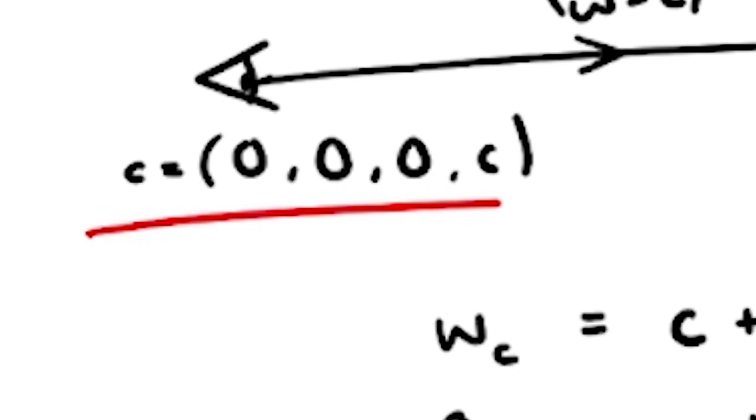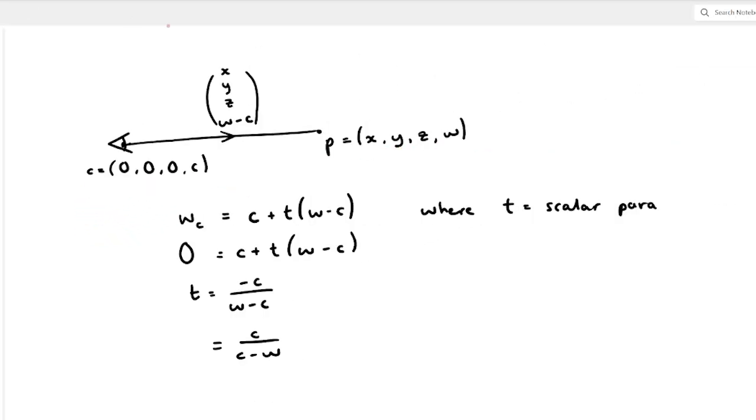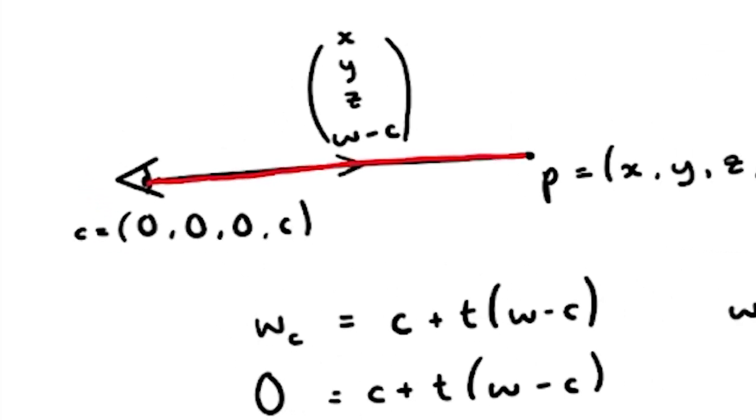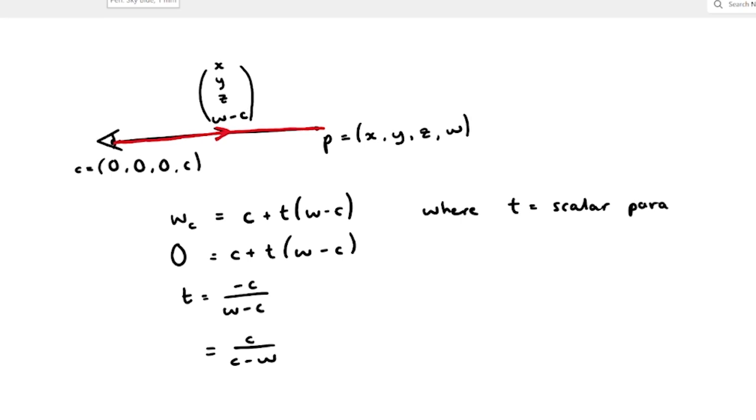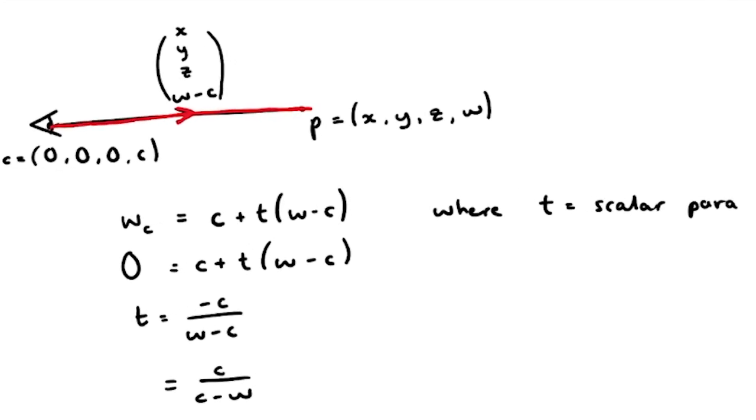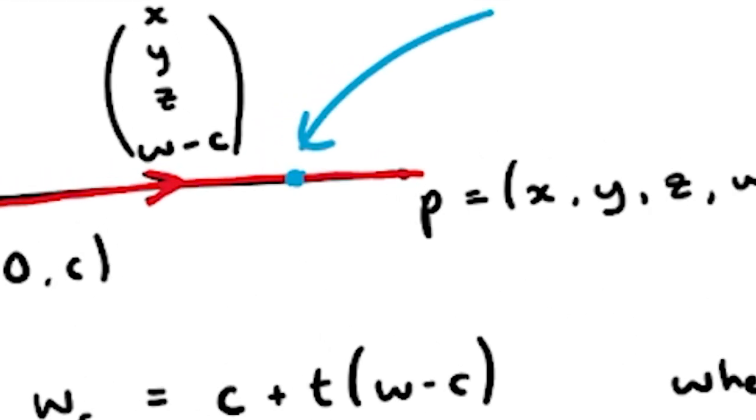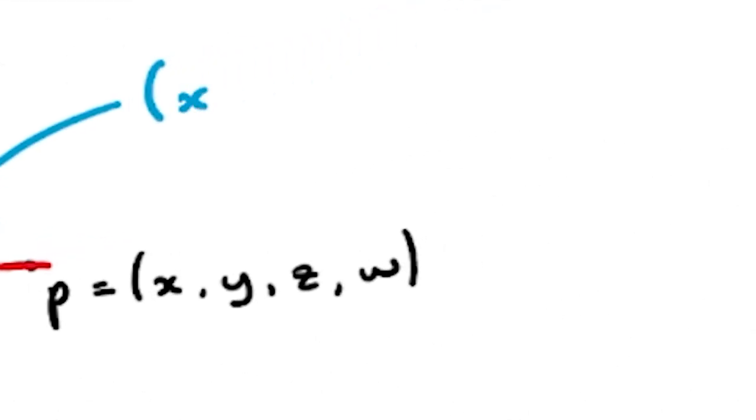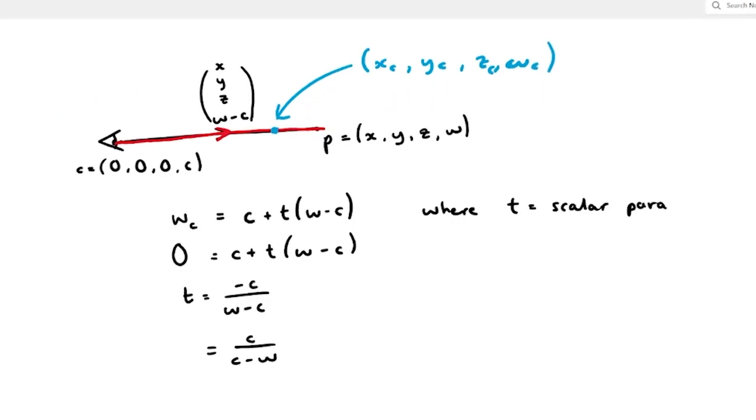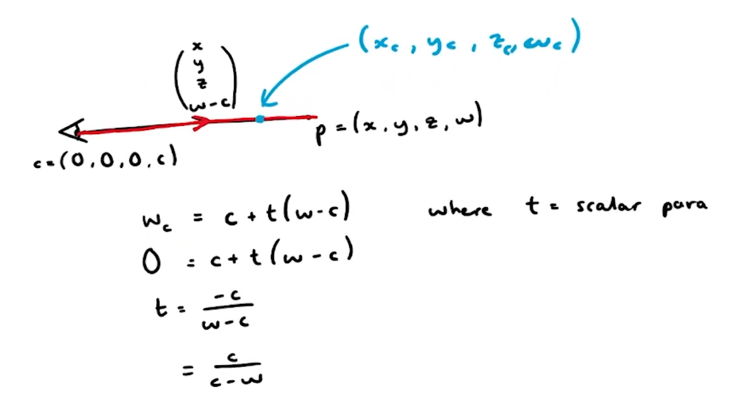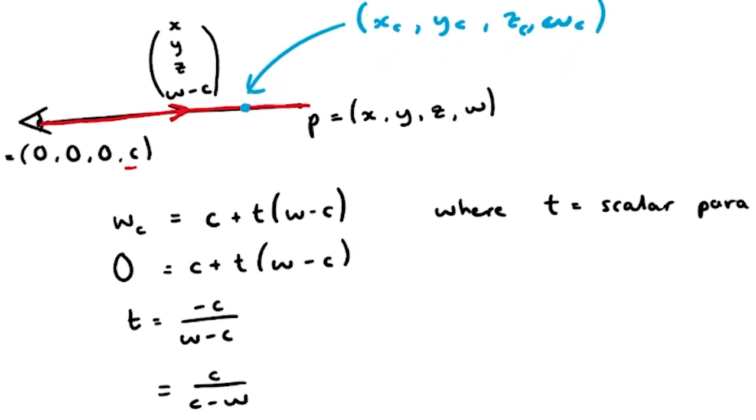Let's say we have a point and a camera in 4D and we want to find the vector between the camera and that point. The vector is represented by x, y, z, w minus c. But let's say we want to represent this parametrically, where a point on this line is equal to xc, yc, zc, and wc. We can say that wc is equal to c plus t lots of w minus c.